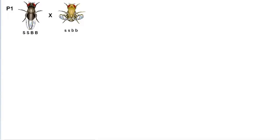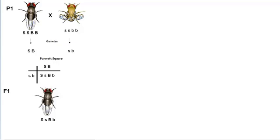The gametes as expected are big S big B and little s little b. If we combine these in a Punnett square, all of the F1 generation are going to be heterozygous. They're going to be phenotypically straight wings with black body.